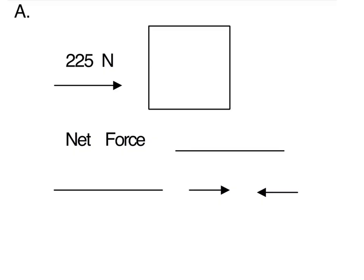All right, let's look at example A. We have a square here. Now this square is just representing an object. It can be any object you want it to be. So I'm just going to write object here.